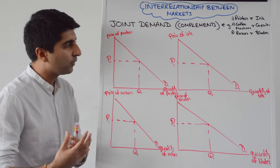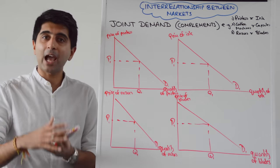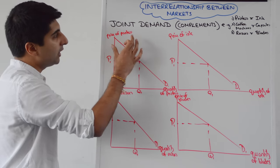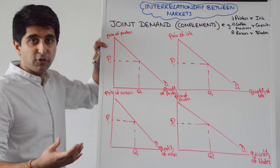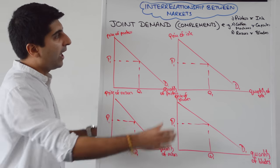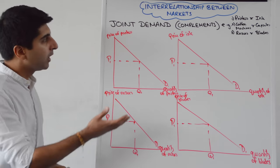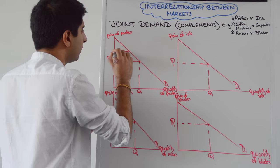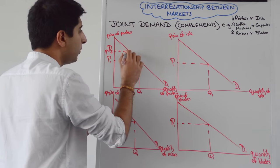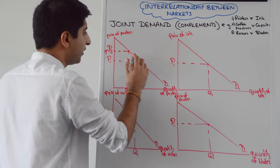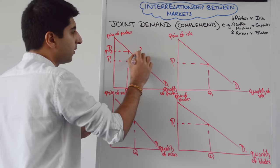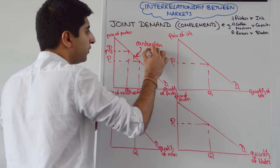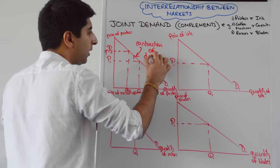Let's understand how the markets are interrelated and how we would show changes in markets between the two goods. So let's look at first of all the demand for printers — the market for printers — and then the demand for printer ink. If the price of printers goes up from P1 to P2, we're going to show a contraction of the demand for printers.